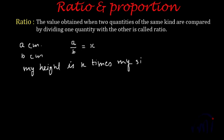If x is greater than one, then a is greater than b. If x is less than one, then a is less than b. In this way you can tell who is taller, who is shorter, or who has got more marks. This is how we compare two values of the same kind — we call it ratio.